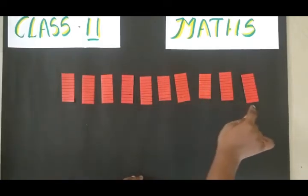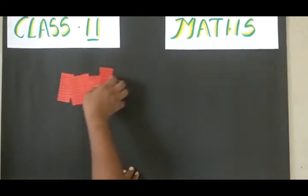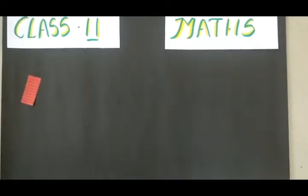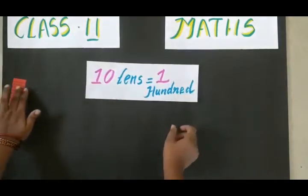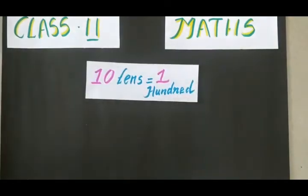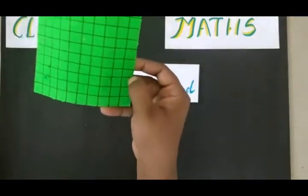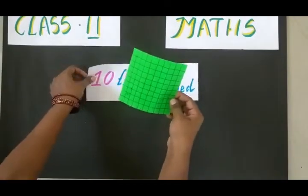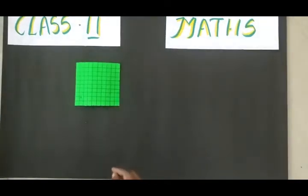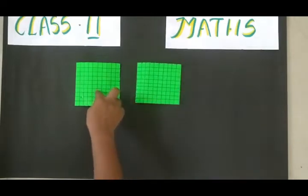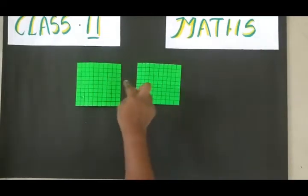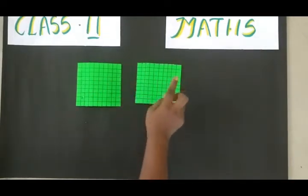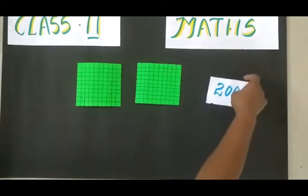Ten tens are equal to one hundred. Here I am representing the hundred by using the steps. I am placing one hundred, two hundred. One hundred plus another hundred — hundred plus hundred will give two hundred.